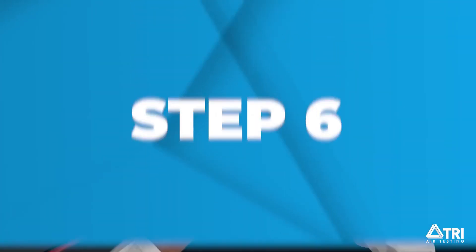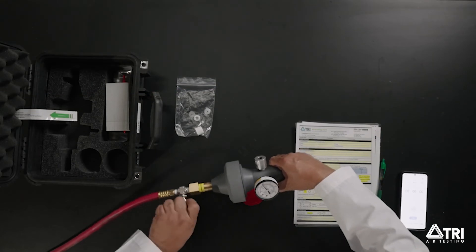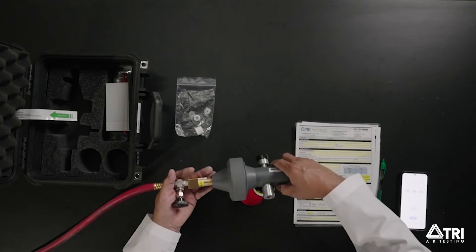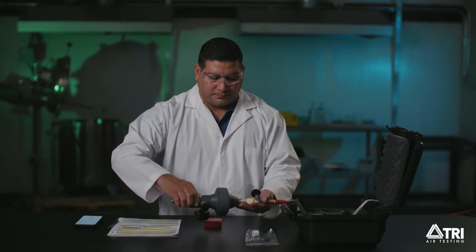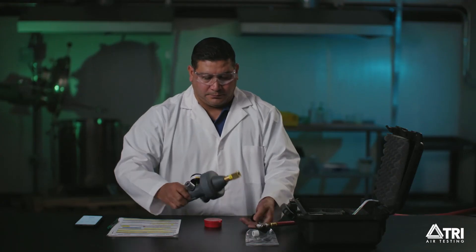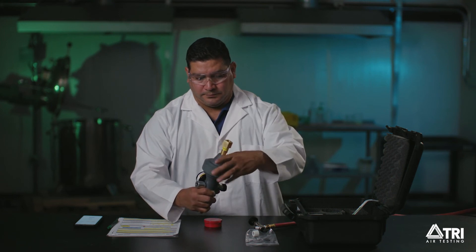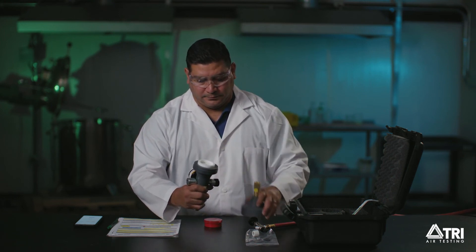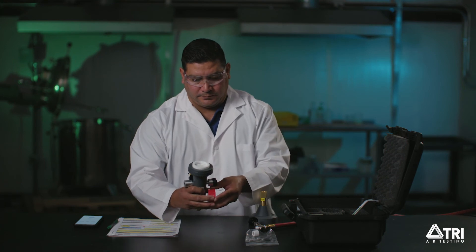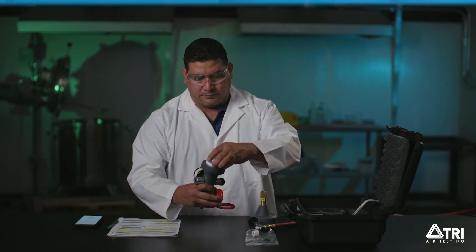Step 6. You have just completed the oil mist and particulate sampling procedure. If you are not doing any additional sampling, turn off the charging lead or air source valve and disassemble the sampling equipment. Return each part to your kit. Place the filter into the supplied cup. Check that the data sheets have been correctly and completely filled out.